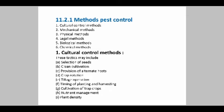In the cultural control method, some techniques or tactics are needful: selection of the seed, clean cultivation, provision of the alternate host, crop rotation, tillage operations, timing of planting and harvesting, cultivation of trap crops, and nutrient management.